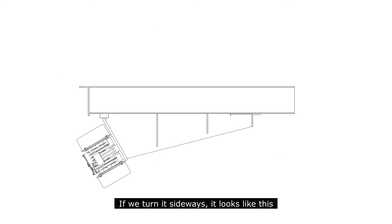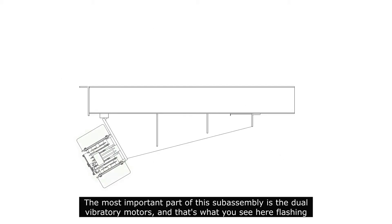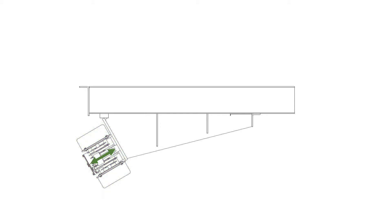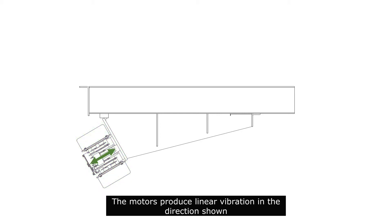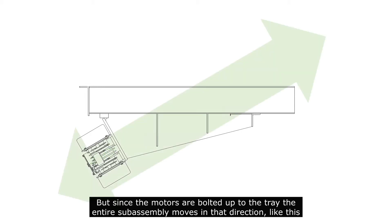If we turn it sideways, it looks like this. The most important part of this subassembly is the dual vibratory motors, and that's what you see here flashing. The motors produce linear vibration in the direction shown. But since the motors are bolted up to the tray, the entire subassembly moves in that direction like this.